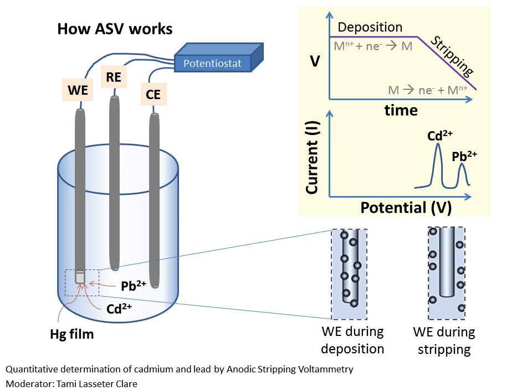One thing you should be aware of when you take the cell apart is that there is a tendency to want to invert the top part of the cell where the electrodes are, so as to put it down. But if any liquid gets poured out of the electrodes and into the stir motor, that could damage the cell. Please try to resist the temptation to put that piece down. You'll just have to hold on to the top part of the cell with one hand while you swap out the sample cup with the other hand, or ask your partner to help position the sample cup while you hold the top part containing the electrodes.